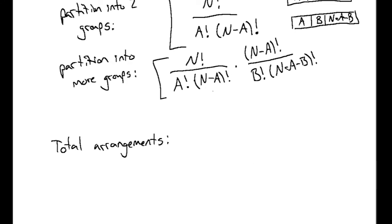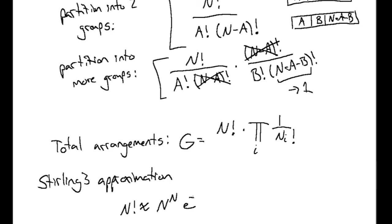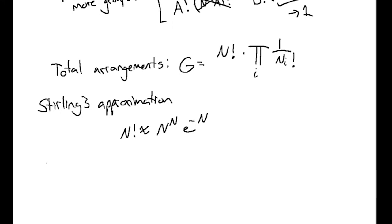If we keep subdividing all the way, the rearrangements of each group-to-be-subdivided always cancel out, and the total number of arrangements G equals n! times the product of 1/(n_i!) over all groups i. G is a macroscopic degeneracy — it counts the number of ways to arrange particles among energy groups, and the higher G is, the more likely we are to find ourselves in that configuration.